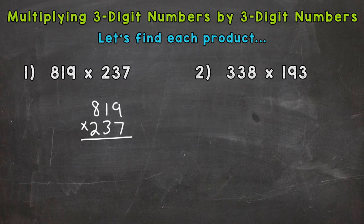Let's start with 7 times 9 which is 63, so we put our 3 and carry the 6. Now we have 7 times 1 which is 7 plus 6 is 13, so we put our 3 and carry the 1. Now we have 7 times 8 which is 56 plus 1 is 57, so we put our 7 and drop our 5, and we get an answer of 5733.